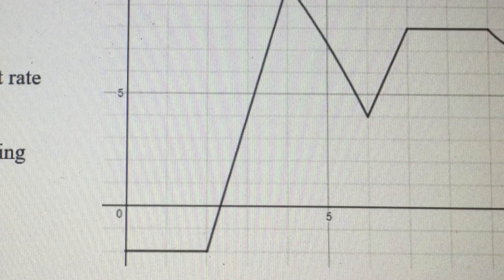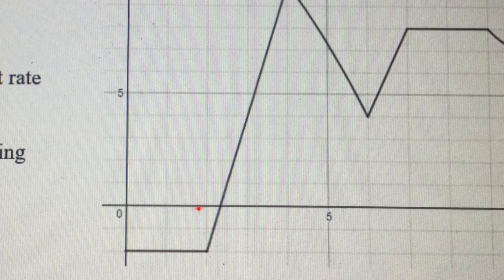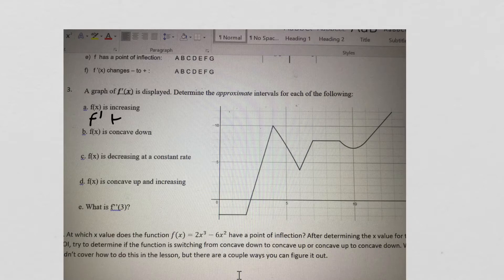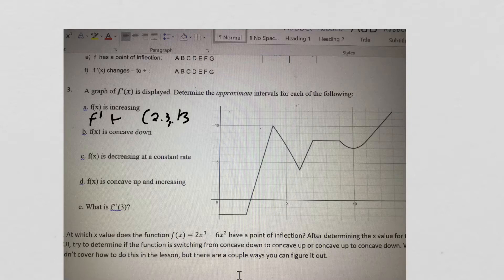And if we zoom in on this, 2.4, 2.3, right? This is x equals 1, x equals 2. Let's say x equals 2.3 is where we start being positive. So it's going to go from 2.3 until 13 is when f of x is increasing.